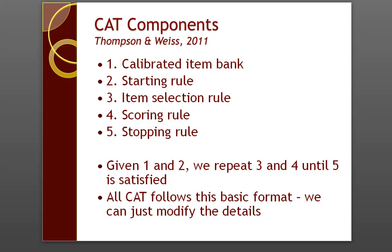Because CATs can be variable length, which means some examinees will have more items than other examinees. The general algorithm of CAT is that given components 1 and 2 being specified and built into a system, we repeat 3, 4, and 5 for each student until we meet the stopping rule, and then the test will stop. All CATs will follow this basic format, but you can modify it for the details based on your situation, such as using a different IRT model for calibrating your item bank or adjusting the item selection rule for item exposures.